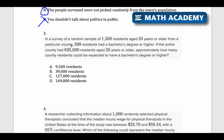Number three, in a survey of a random sample of 1,500 residents. Okay, so that's good. They've got a random sample. So there's a random sample of 1,500 residents aged 25 years or older from a particular county. 399 residents had a bachelor's degree or higher. If the entire county had 635,000 residents aged 25 years or older, approximately how many county residents could be expected to have a bachelor's degree or higher? So here's what I have. We've gotten a sample size of 1,500. So out of 1,500, 399 of them have a bachelor's degree or more.